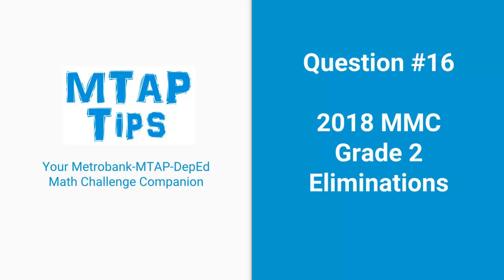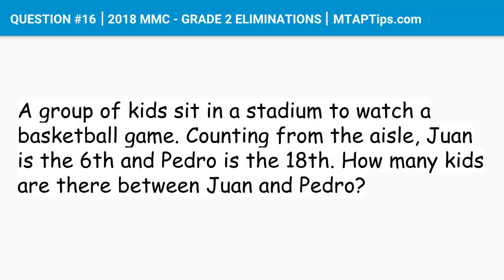Question number 16 for 2018 MMC grade 2 eliminations. A group of kids sit in a stadium to watch a basketball game. Counting from the aisle, Juan is the 6th and Pedro is the 18th. How many kids are there between Juan and Pedro?